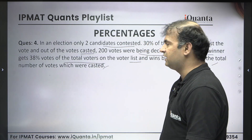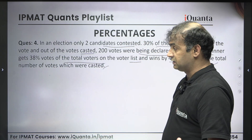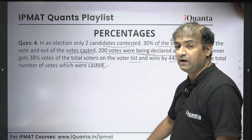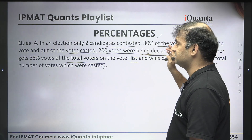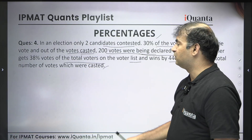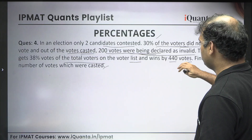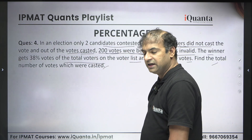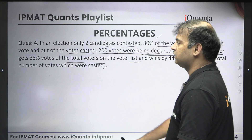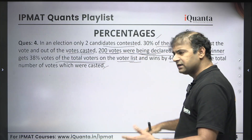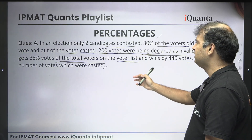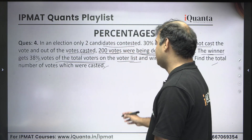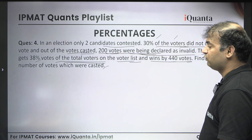There are only two candidates. 30% of voters did not cast their vote, meaning 70% of people must have casted votes. Among those 70%, 200 votes were declared as invalid. These invalid votes will not count toward the final result. The winner has got only 38% of the votes of the total voters on the voter list, and he wins by 440 votes. We only need to find the number of votes which were casted — not the total votes in the voter list.